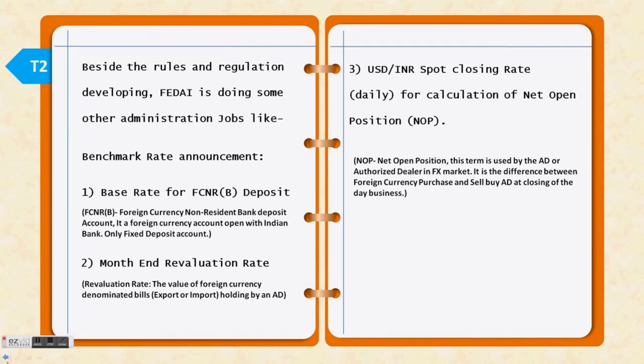From market open until market close, authorized dealers do many transactions — some buy (purchase) transactions and some sell transactions. When the market closes at the end of the day, the difference between total buy and sell is called the open position. The rate required to convert this open position calculation into Indian rupees is also declared by FEDI at the end of each day.